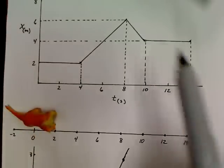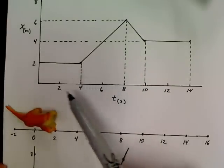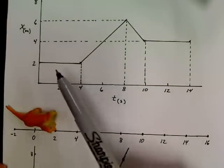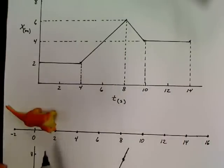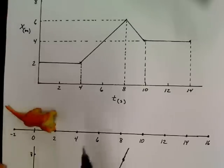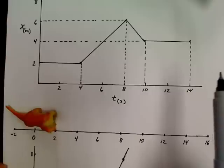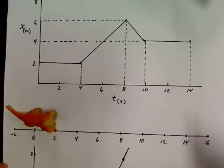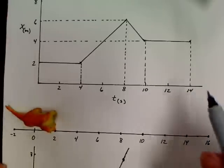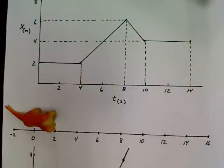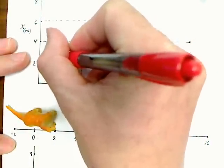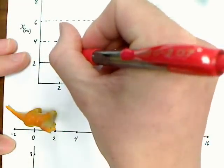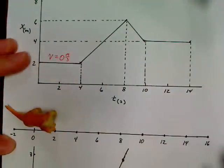Apparently for the first 4 seconds, my dinosaur remains at 2 meters. The dinosaur stays in this exact same location. So if I ask you to find the velocity of this dinosaur, the velocity of my dinosaur is equal to 0 meters per second.